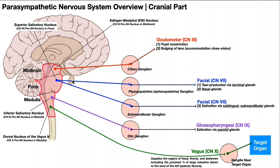Neurons going to the pterygopalatine ganglion synapse with third neurons that project ultimately to the nose and the eye. In terms of the eye, these neurons have branches to the lacrimal glands — situated on the superior lateral border of the eye in the orbit — and are involved in the production of tears. For the nose, they innervate nasal glands that lubricate the nasal cavity and prevent it from drying out.